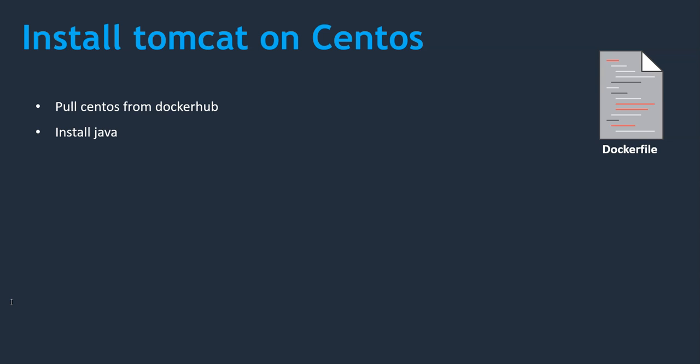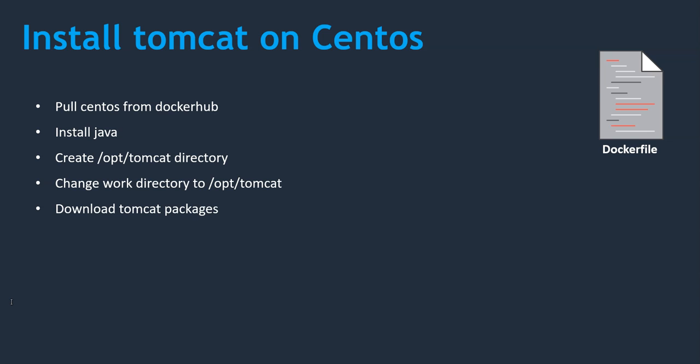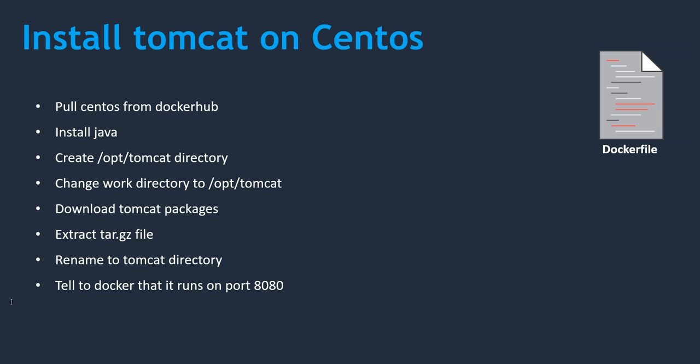Once Java is installed, we should download Tomcat. For that, we can create a dedicated directory — slash opt tomcat. Once the directory is created, we need to work inside it, so we change the working directory. Once we are inside the directory, we can download the Tomcat packages. Tomcat packages come with the tar.gz extension. Once downloaded, we need to extract them. After extraction, we get an alphanumeric directory name, which we can rename to something more understandable like 'tomcat'. Once renamed, we need to tell Docker on which port Tomcat is running — by default port 8080. Finally, we need to start our Tomcat services. These are the steps we should follow.